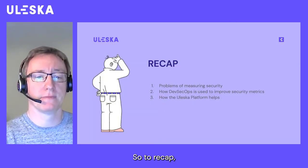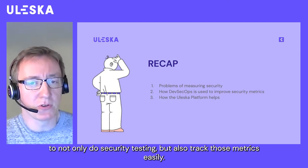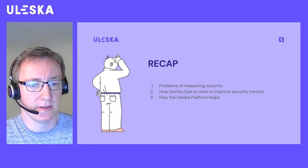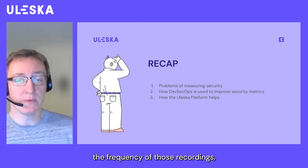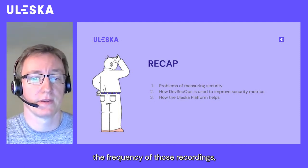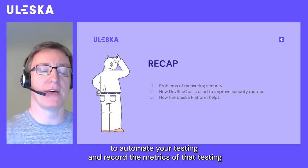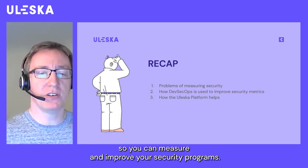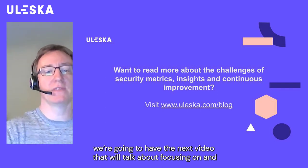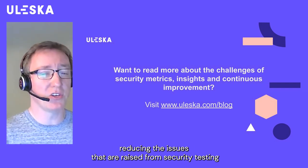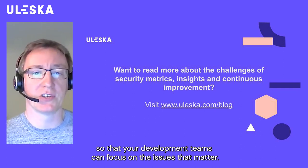To recap: traditional approaches can make it difficult to not only do security testing but also track those metrics easily. DevSecOps automation can greatly improve the frequency of those recordings. The Uleska platform works to automate your testing and record the metrics of that testing so you can measure and improve your security programs. Come back next week — we're going to have a video talking about focusing and reducing the issues raised from security testing so that your development teams can focus on the issues that matter.